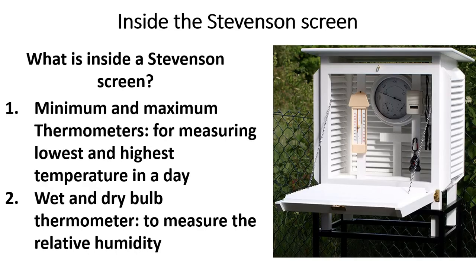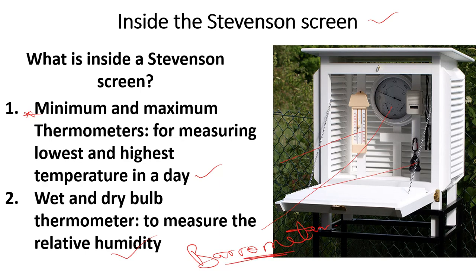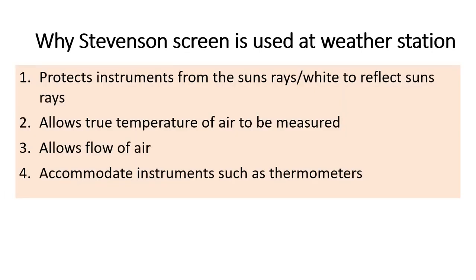Questions often ask what instruments are found inside the Stevenson screen. Inside, you can see the minimum and maximum thermometer, which is used for measuring the lowest and highest temperature in a day. You can also see the wet and dry bulb thermometer, which is used to measure relative humidity. There is also a barometer, which is used to measure air pressure. These instruments are all found inside the Stevenson screen.